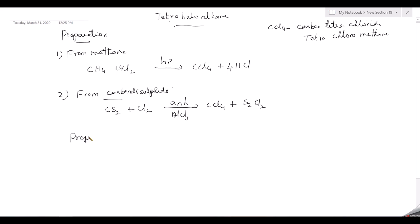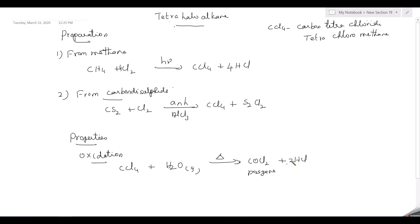Now the properties of carbon tetrachloride. First, oxidation: CCl4 on treatment with hot water vapor forms COCl2 — carbonyl chloride (phosgene), which is a highly poisonous gas — and two molecules of hydrogen chloride. Second, reduction: carbon tetrachloride on reduction using iron and hydrochloric acid gives CHCl3 (chloroform) and hydrogen chloride.